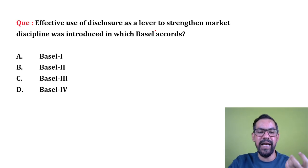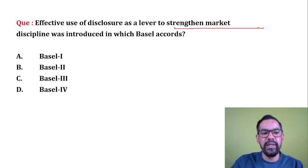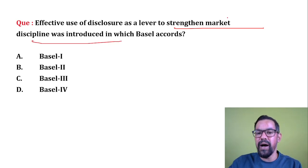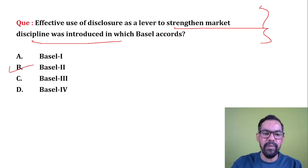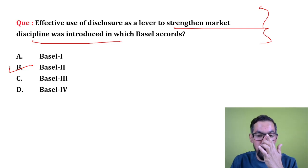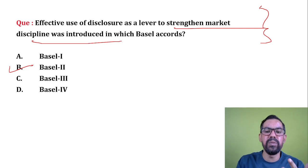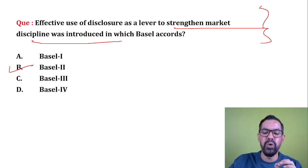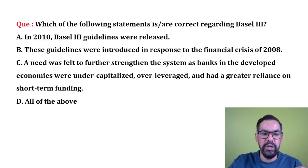Please remember the full form of RWA (risk-weighted assets) as they sometimes ask for it. Next question: effective use of disclosure as a lever to strengthen market discipline was introduced in which Basel norm? Market discipline was introduced in Basel 2 — first time in Basel 2, and it is also part of Basel 3. There were three pillars of Basel 2, and market discipline is one of them. Option B is the right answer.